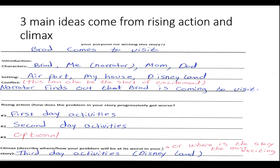You should have got a worksheet that looks like this. If you filled this worksheet out, you already have your three main ideas. Your three main ideas come from your first rising action, your second rising action, and your climax. If you chose to use a third rising action, that means you'll have four main ideas, four circles, and four body paragraphs. But remember that number three is optional, so you don't have to have four paragraphs, but you do need to have at least three paragraphs.